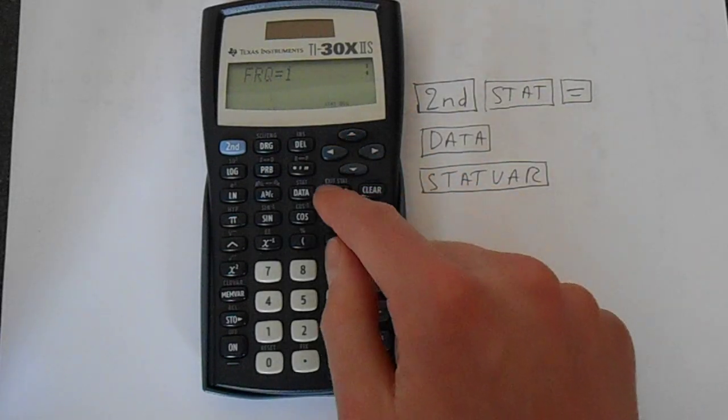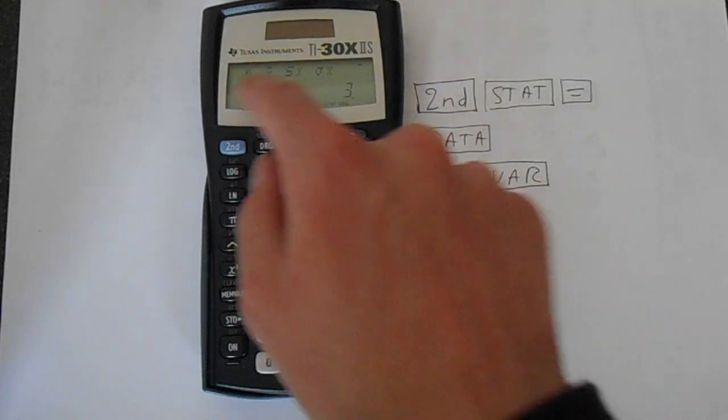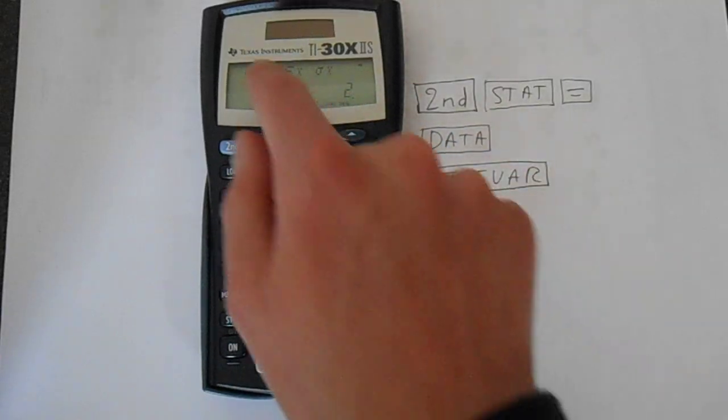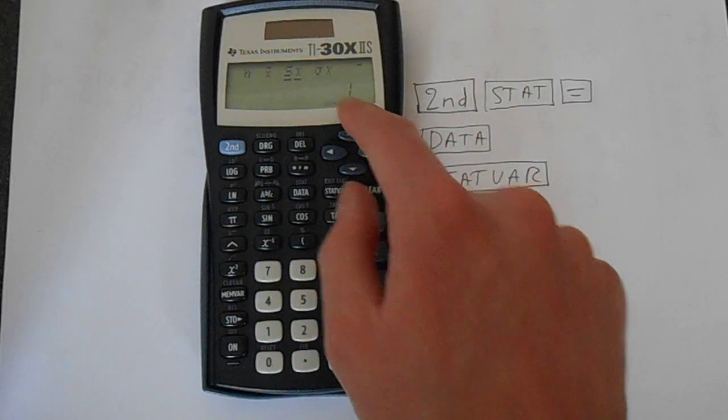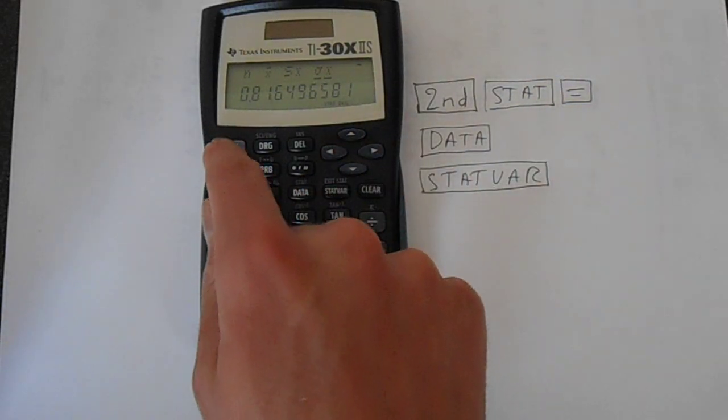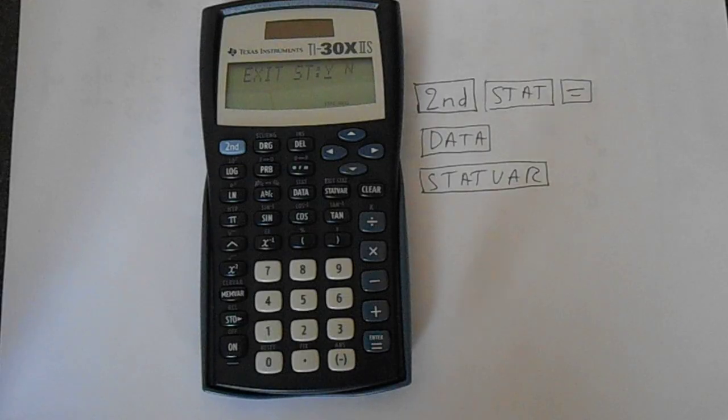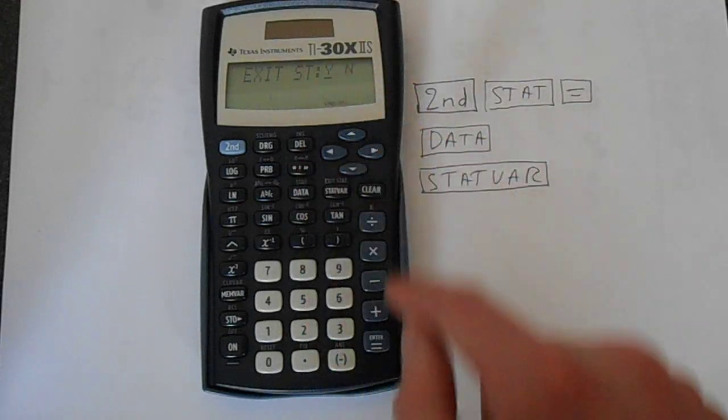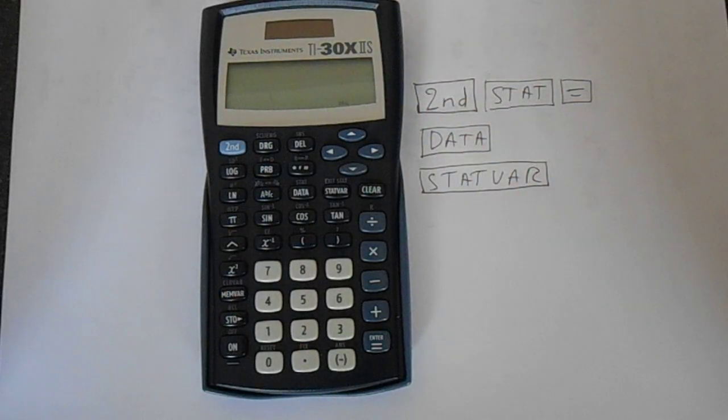And then if we press stat var, it tells us we've put in three data points. The average is 2. Standard deviation, 1. And the other standard deviation, 0.81. So that's the N and the N minus 1 definitions. If we want to get out of statistics, second function, exit stat. Yes or no? We want yes. And that's us back to normal.